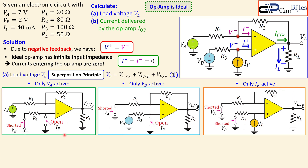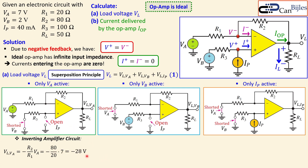For Va only: since I+ is zero, there is no voltage drop across R3, so that branch acts as a short. This reveals an inverting amplifier configuration. Applying the formula: VL due to Va = −(R2/R1) × Va = −(80/20) × 7 = −28 volts. That is the contribution of Va at the load output.